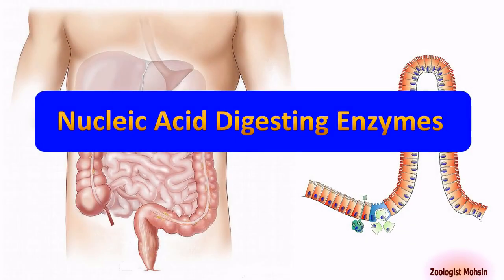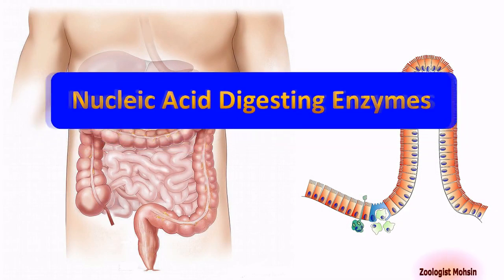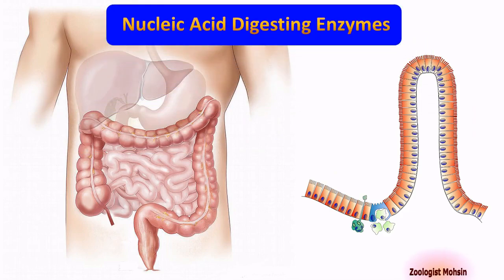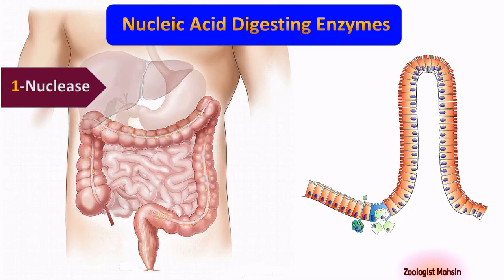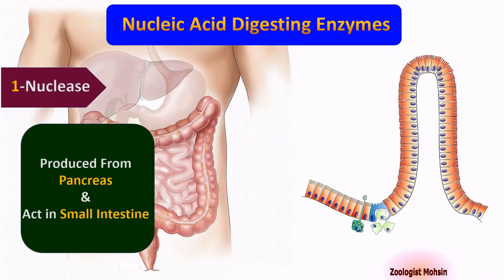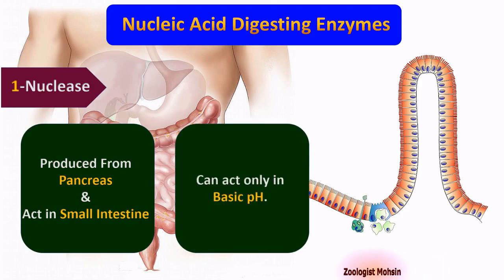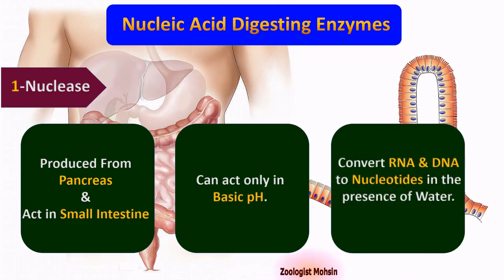Nucleic acid-digesting enzymes. Number one: nuclease. Nuclease is produced from the pancreas and acts in the small intestine. Nuclease can act only in basic pH, that is more than 7. It converts RNA and DNA molecules to nucleotides in the presence of water.